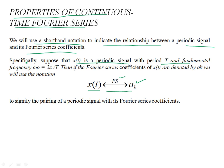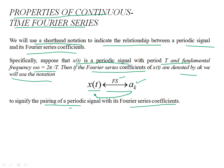Similarly, if you are given the specification of a_k as the Fourier coefficient, that corresponds to the signal x(t) conversely. If x(t) is a periodic signal with period T and fundamental frequency ω₀ = 2π/T, then the Fourier series coefficients are denoted by a_k's. This is a one-to-one mapping, so if you can go in the forward direction you can go in the reverse direction — these are equivalent specifications.